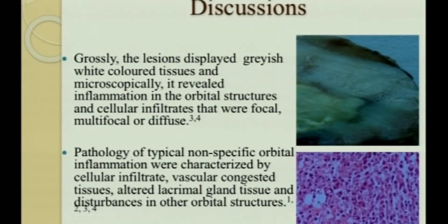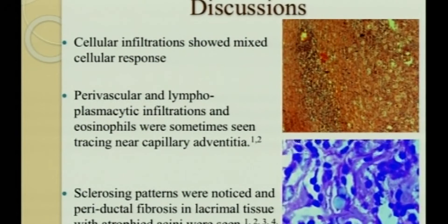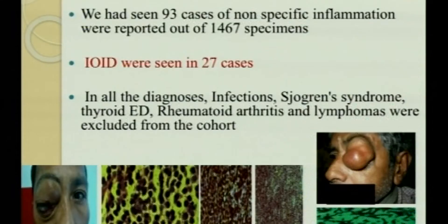Grossly, the enucleation specimen displayed greyish-white coloured tissue, and microscopically revealed inflammation in the orbital structure with cellular infiltrates that were focal, multifocal, or diffuse. Pathology of typical non-specific orbital inflammation was characterized by cellular infiltrate, vascular congestion, altered lacrimal gland tissue, and disturbance in orbital structures. Cellular infiltration showed a mixed cellular response with perivascular and lymphoplasmacytic histiocytic infiltration seen along with eosinophils, sometimes tracing the capillary adventitia. Sclerosing patterns were noticed in the periductal tissue, lacrimal gland, and atrophic acini were also seen.